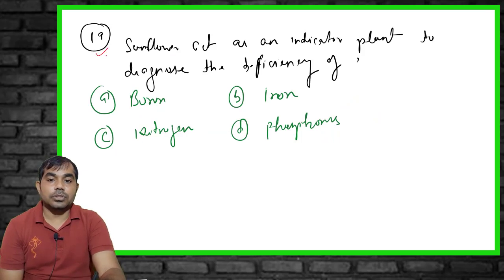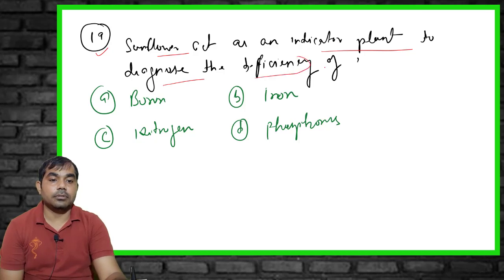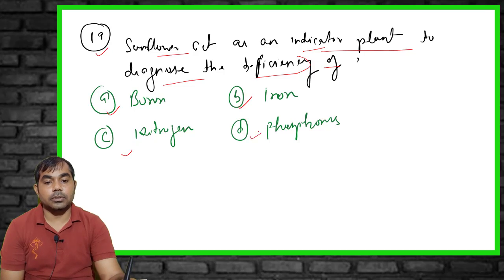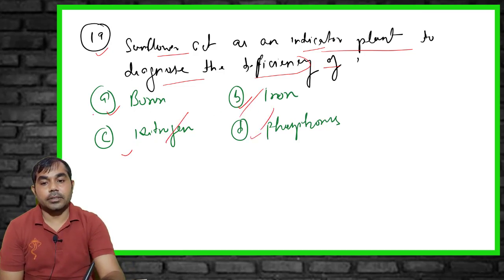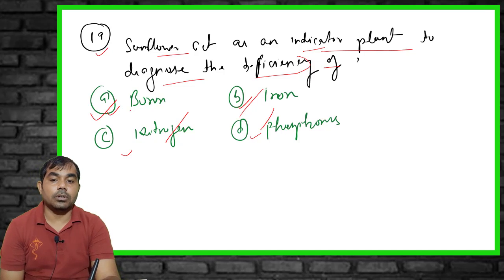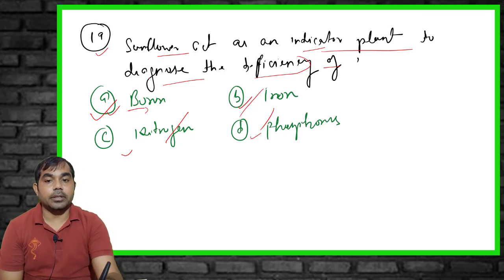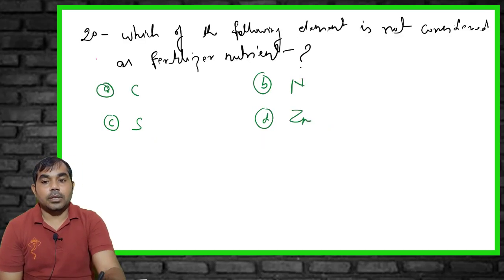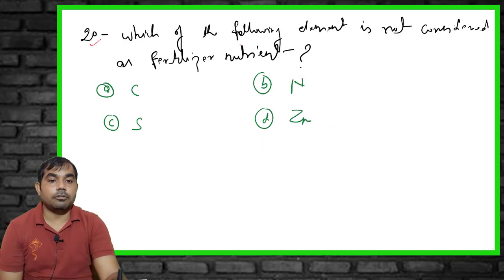The nineteenth question: sunflower acts as an indicator plant to diagnose the deficiency of which element? Options include boron, iron, nitrogen, and phosphorus. The right answer is boron. Sunflower very efficiently indicates boron deficiency, which is why it is used as an indicator plant for boron deficiency diagnosis.